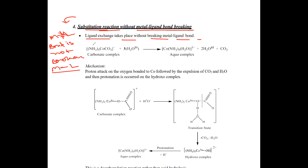For example, a carbonate pentamine cobalt complex — that is, pentamine carbonate cobalt — when this reaction happens, it becomes a complex form and carbon dioxide is released. These are substitution reactions, but the metal-ligand bond does not break. Let's understand the mechanism for this.